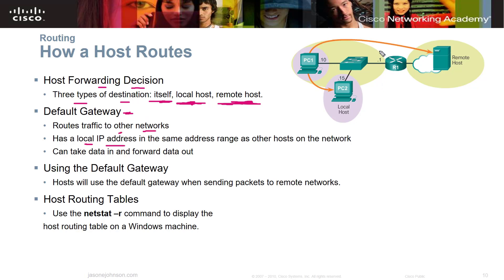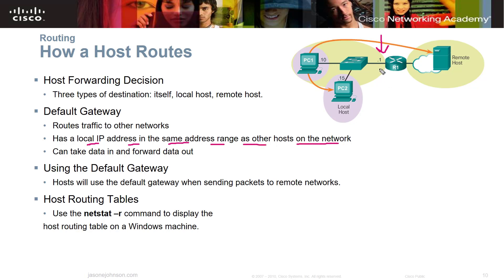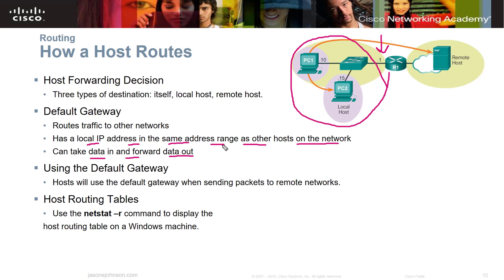The default gateway has a local IP address in the same address range as other hosts on the network — devices need to be able to see it, so it must be inside that same local area network. It can take data in and forward data out. It's a gateway, a gatekeeper that controls what goes in and out of the system.